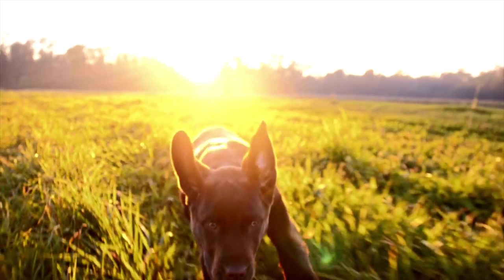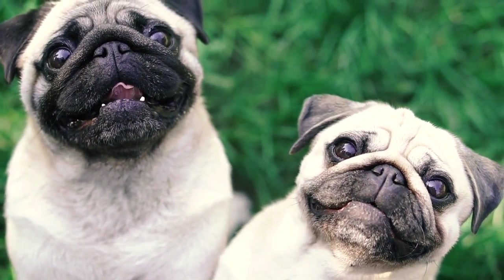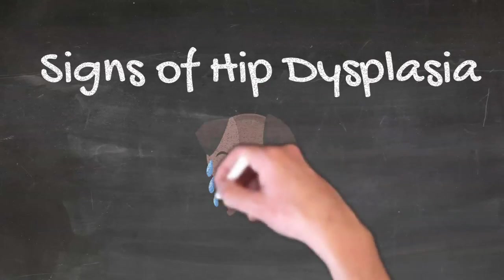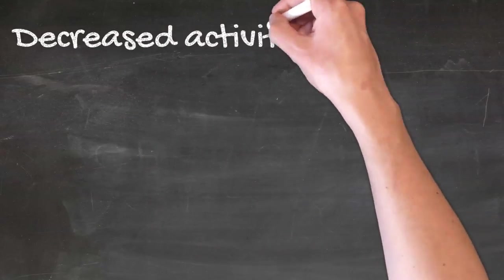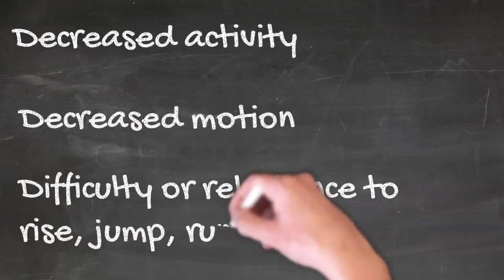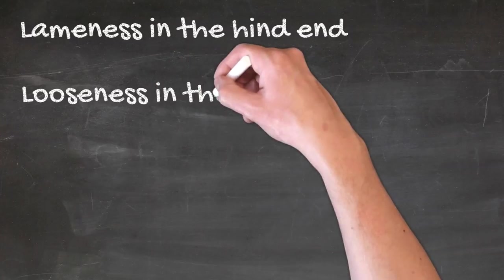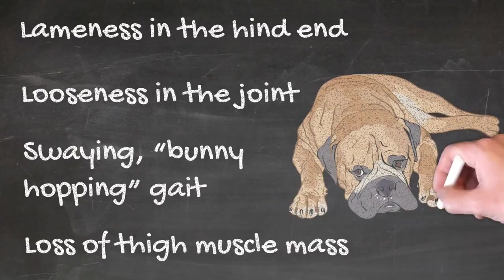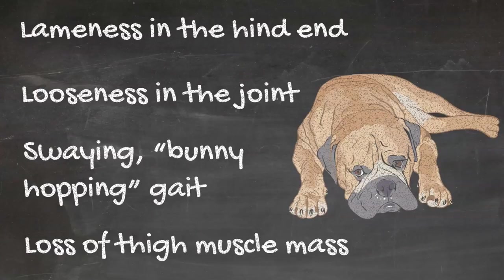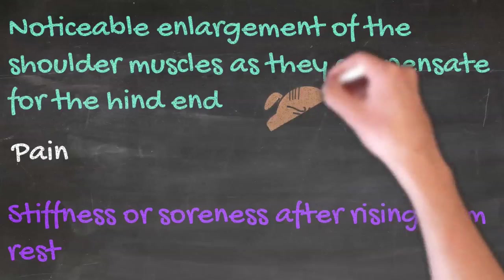Signs that your dog may have hip dysplasia include: decreased activity, decreased range of motion, difficulty or reluctance to rise, jump, run, or climb stairs, lameness in the hind end, looseness in the joint, swaying or bunny hopping, loss of thigh muscle mass, and pain, stiffness, or soreness after rising from rest.